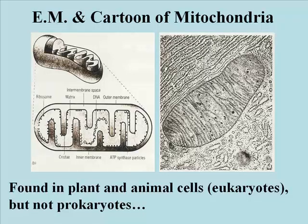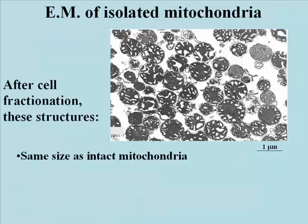which can also be seen in the transmission electron micrograph on the right. Look at the cell fractionation of mitochondria in TEM on this slide. Actually, these structures don't look a whole lot like what you would see in cross-sections of cells, but they are about the same dimensions as mitochondria.